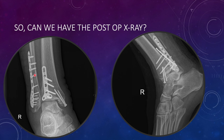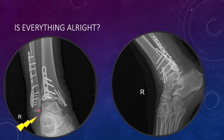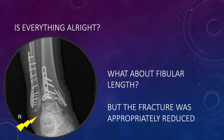Looking at the postoperative radiograph — AP view and lateral view — while the fracture fixation appears satisfactory, we are not happy with one aspect. There is increased space between the lateral malleolus and the talus, and the length of the lateral malleolus has been reduced — it is almost at the level of the medial malleolar tip. There is definite shortening. However, according to the surgeon, the fracture surfaces were satisfactorily matched during reduction. So why did this problem occur?